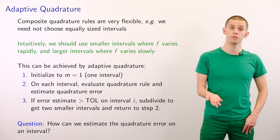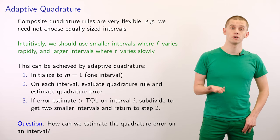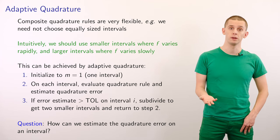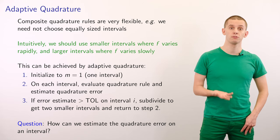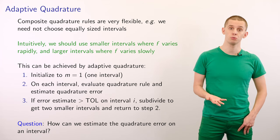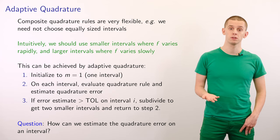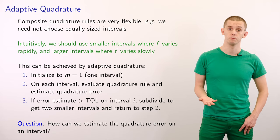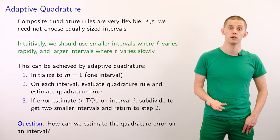It's worth noting that composite quadrature rules are very flexible. In particular, we don't need to choose our intervals to be equally spaced. Intuitively, we could choose intervals for a function f so that they are small in places where f varies rapidly and large in places where f varies slowly. We can perform this using an adaptive procedure: start with m equal to 1, try integrating with just one interval, evaluate our quadrature rule on each interval and estimate the associated error. If the error estimate is bigger than some tolerance, we subdivide that interval into 2 and try again, leading to a recursive subdivision procedure until we reach the required error tolerance.